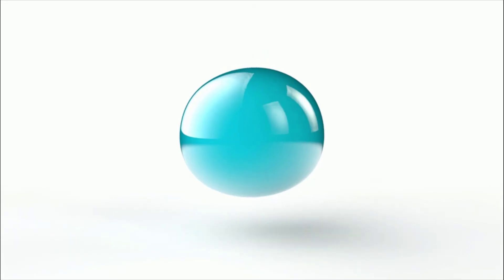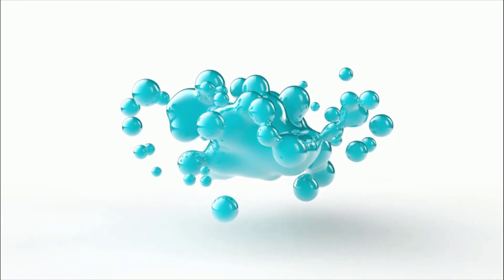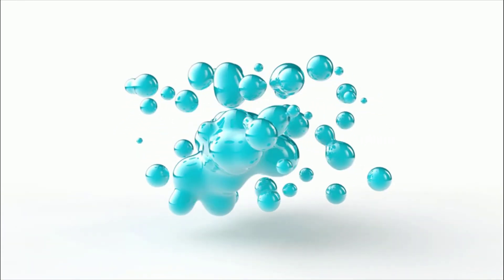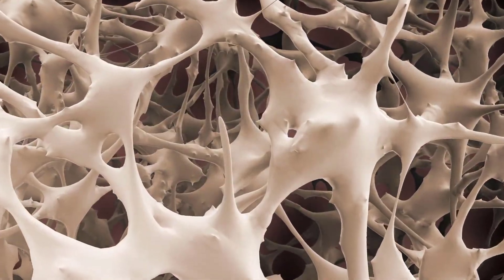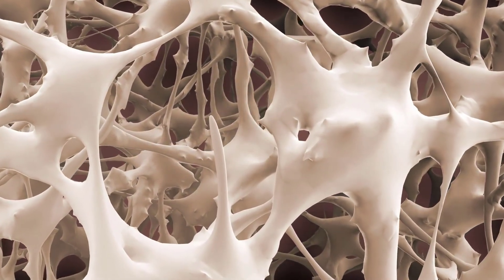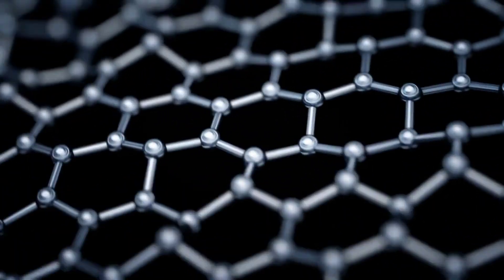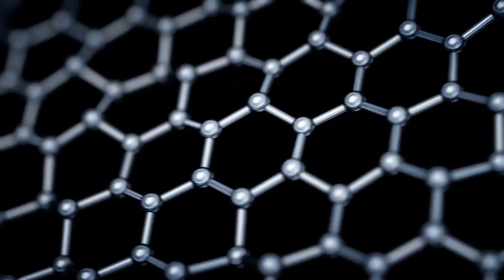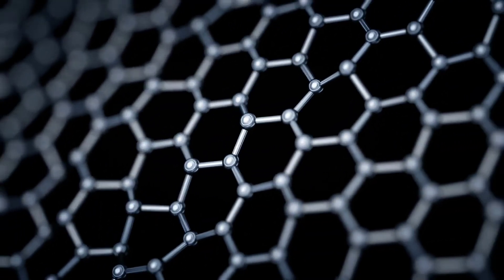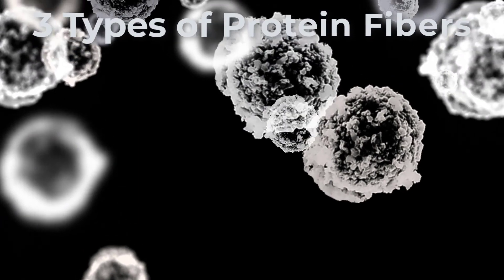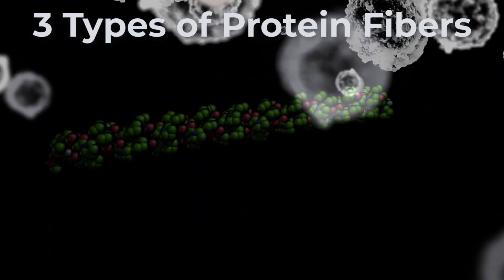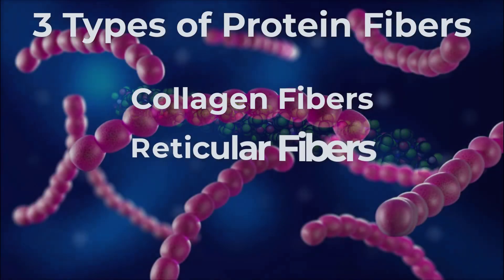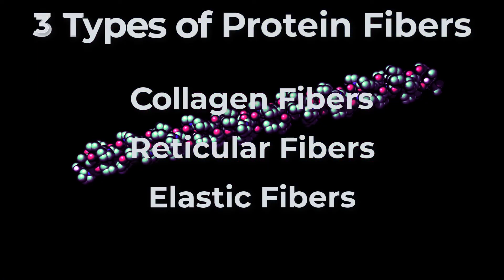The ground substance refers to the substance that surrounds the cells and fibers of the extracellular matrix. The ground substance is a thick or jelly-like substance, except in bone where the ground substance is calcified. The matrix has a scaffolding made up of fibrous proteins that provide support for the connective tissue. There are three types of protein fibers that can be found in connective tissue: collagen fibers, reticular fibers, and elastic fibers.